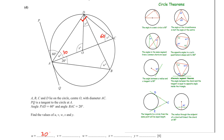Next we have to find w. w originates from A and D, and v also originates from A and D. So we can use this rule: angles in the same segment from a common chord are equal. The chord is AD, so therefore w is also equal to 60.